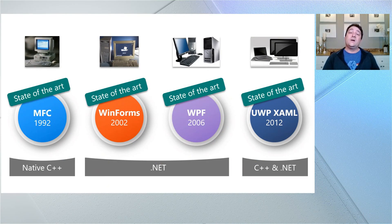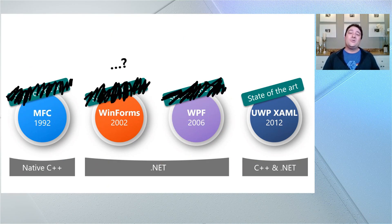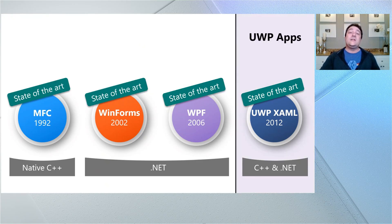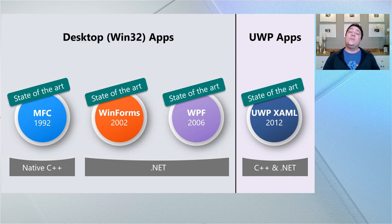You might be thinking that UWP XAML must have been the framework to replace all the others as the new state-of-the-art — and the answer is not exactly. UWP XAML only works in UWP apps, which are a different type of app than what's produced by MFC, WinForms, or WPF. We call those left-side apps desktop or Win32 apps. These two types of apps have different sets of APIs you can call and different ecosystems of libraries built for them.